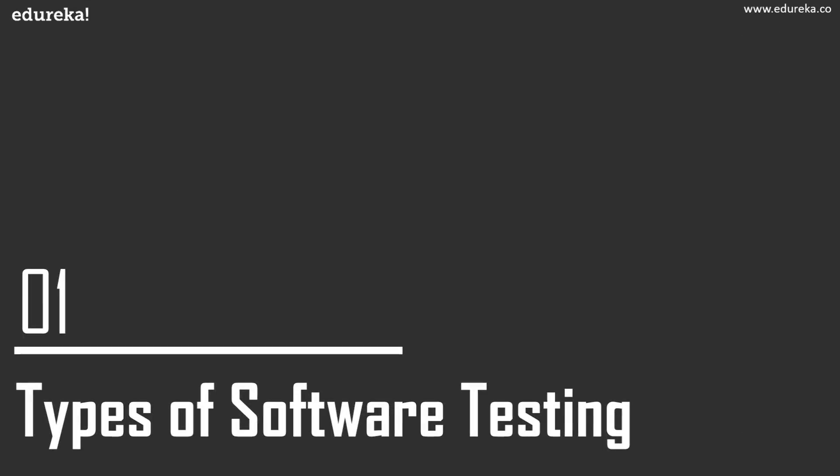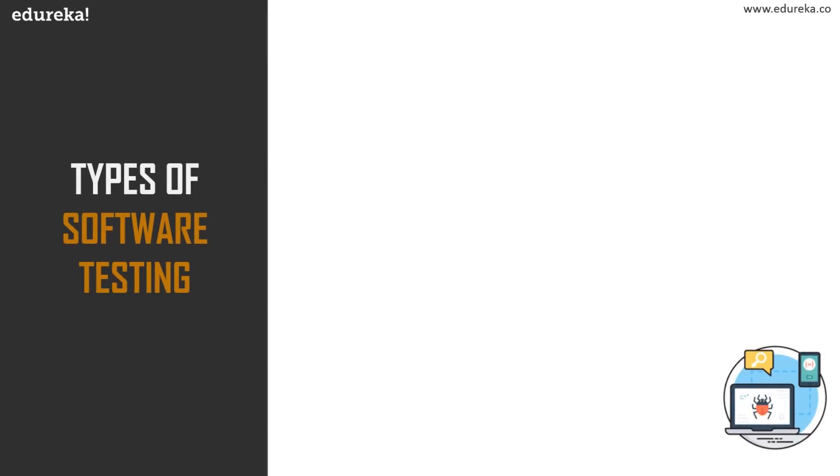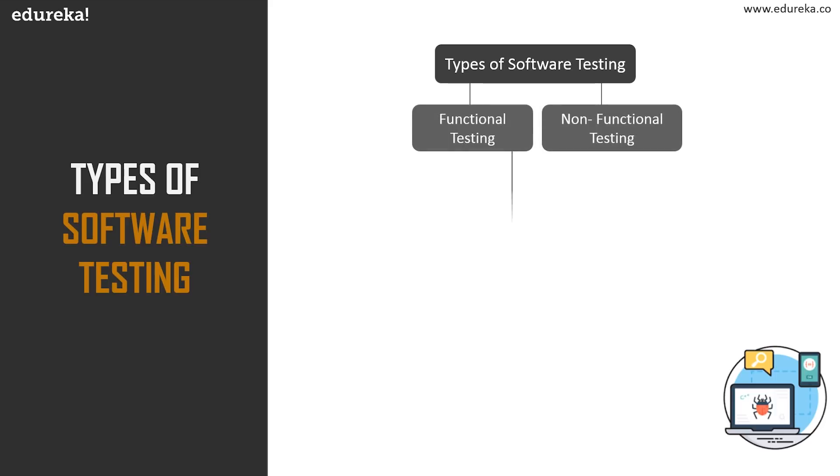Today's world of technology is completely dominated by machines, and their behavior is controlled by the software powering it. In this accelerating and increasingly digital business world, software development and delivery is the key to building a competitive edge. The prime objective of any software project is to get high quality output while reducing cost and time. To achieve that, companies subject their software products to different levels and types of testing before release.